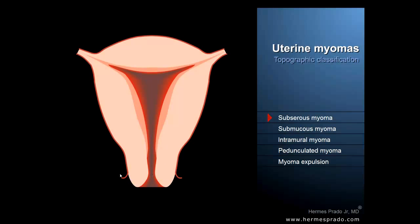The external surface of the uterus is covered by a serous membrane, also known as peritoneum. And this soft mucosal lining that we see here in the uterine cavity is the endometrium.